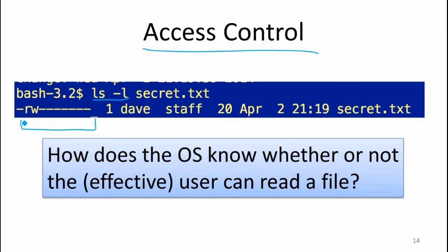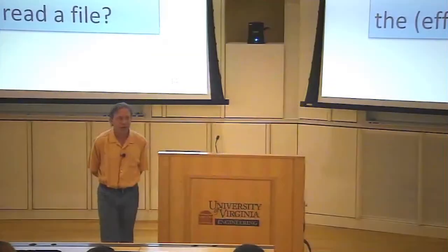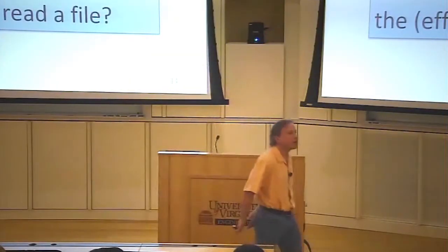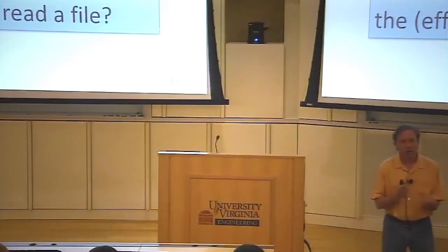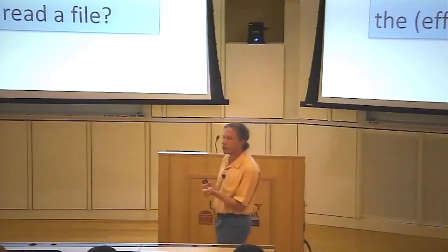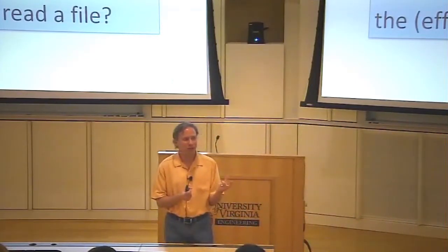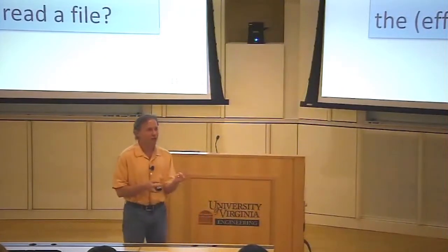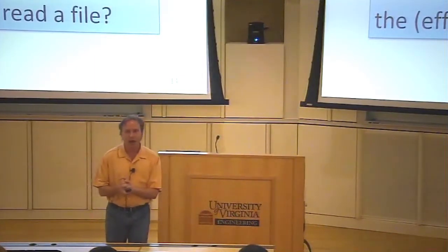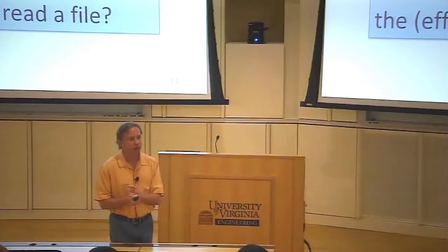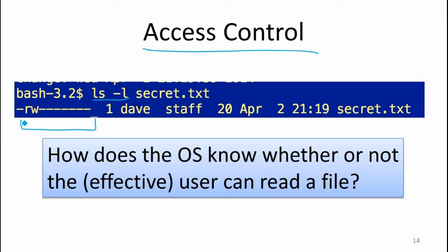The permission bits are in the inode, not in the directory. If they were in the directory, the same content could be visible through different file names with different permissions, which gets complicated. We can verify this: we created 'top_secret' as a hard link to 'secret', then did a chmod making the file not readable or writable to anyone. If permissions are in the inode, this should change permissions for both names — and it did.